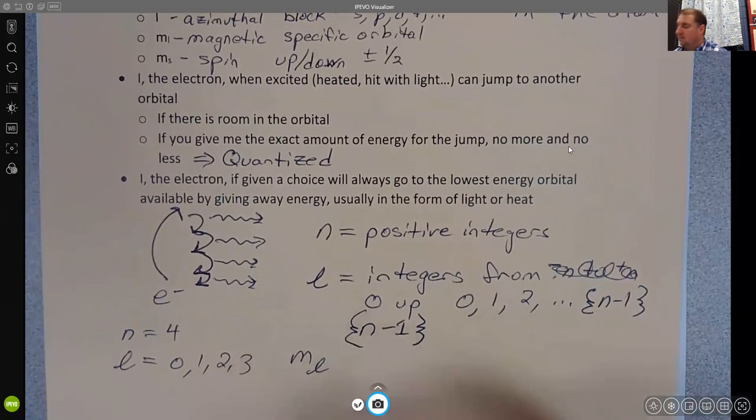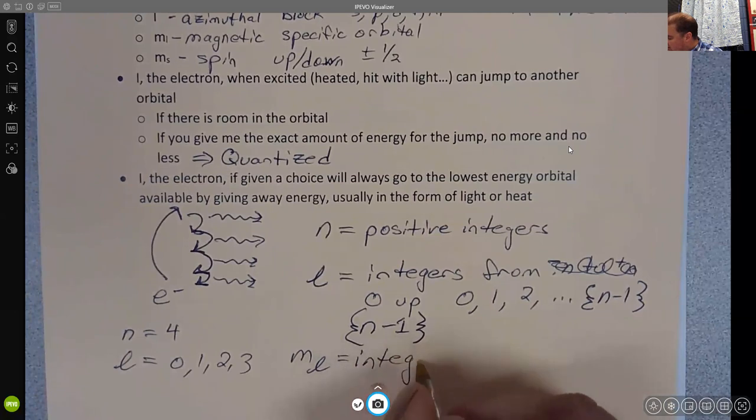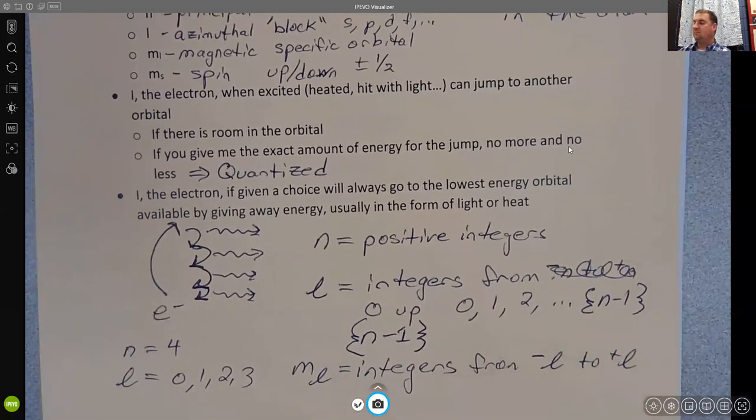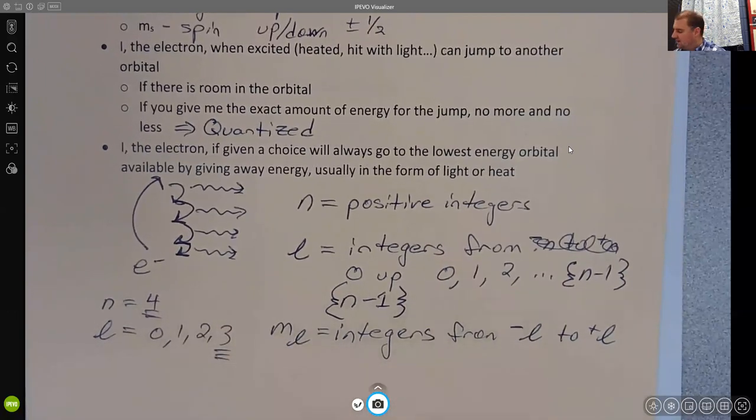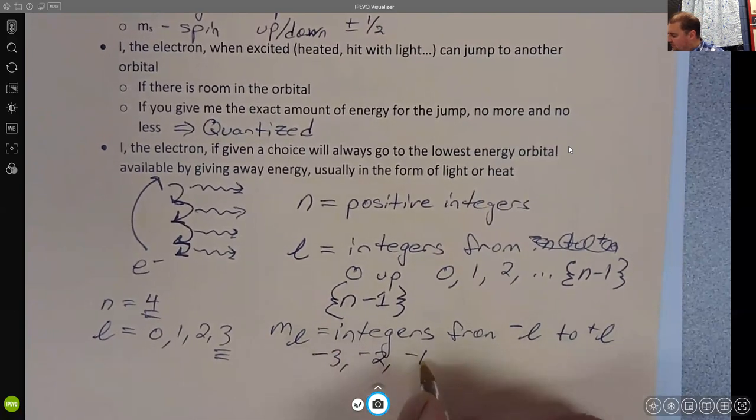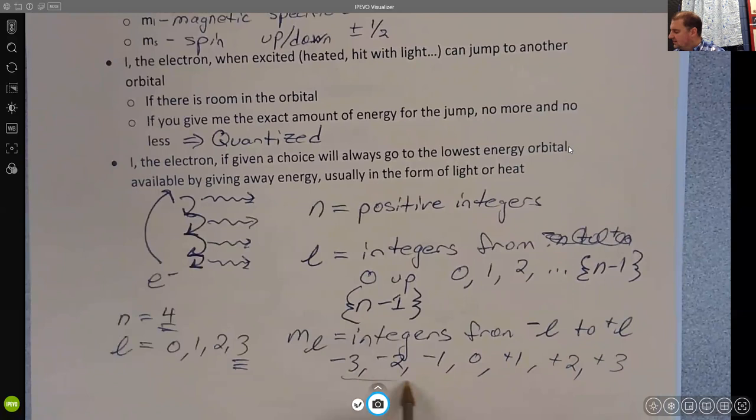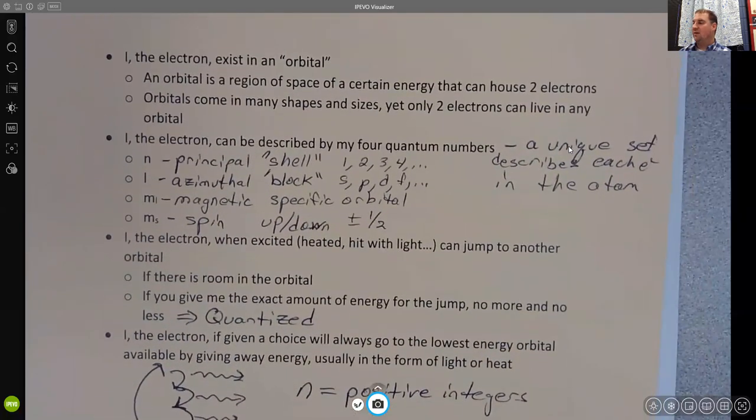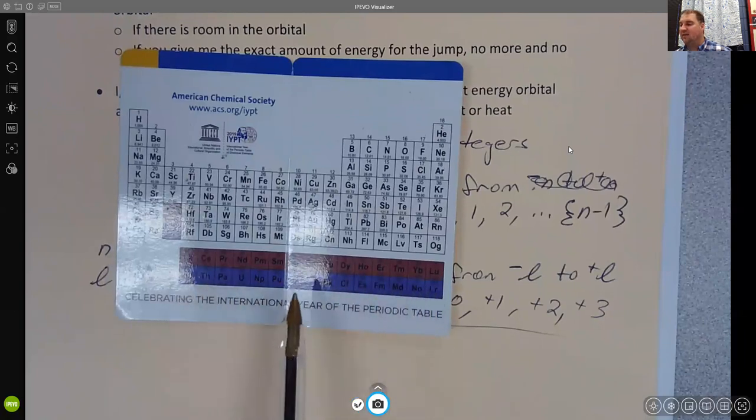m sub l, the magnetic quantum number. This is the one that is allowed to be integers from negative l to positive l. And so again, if n is four, if l happened to be three, then m sub l could be negative three, negative two, negative one, zero, positive one, positive two, and positive three. Notice that it's seven wide. If that represents seven different orbitals and every orbital can hold two electrons, then this represents 14 electrons.